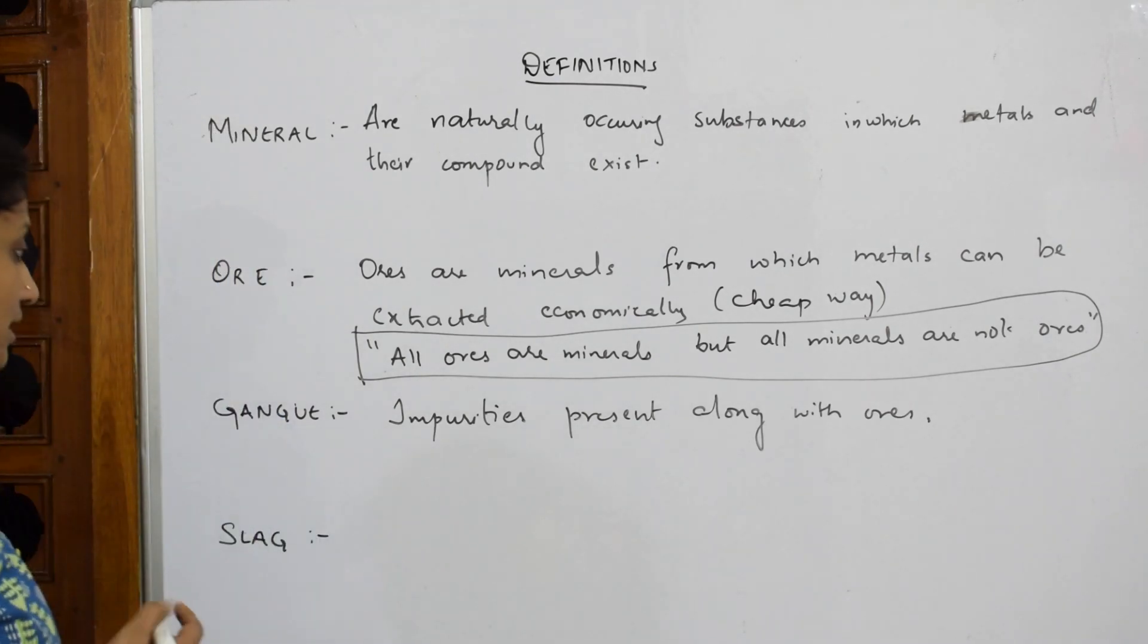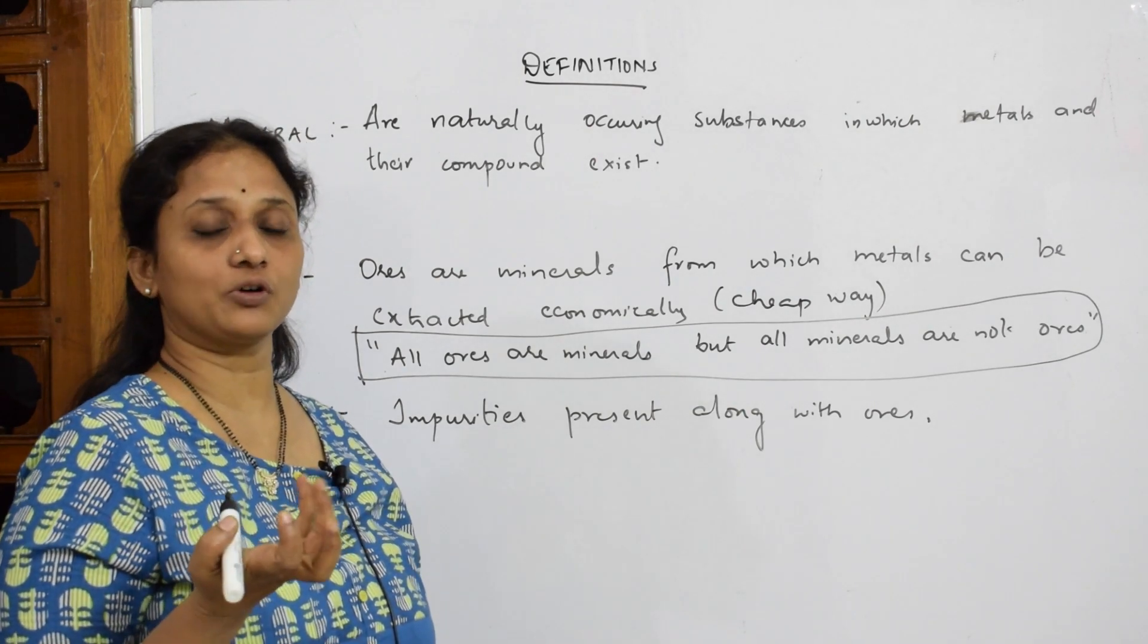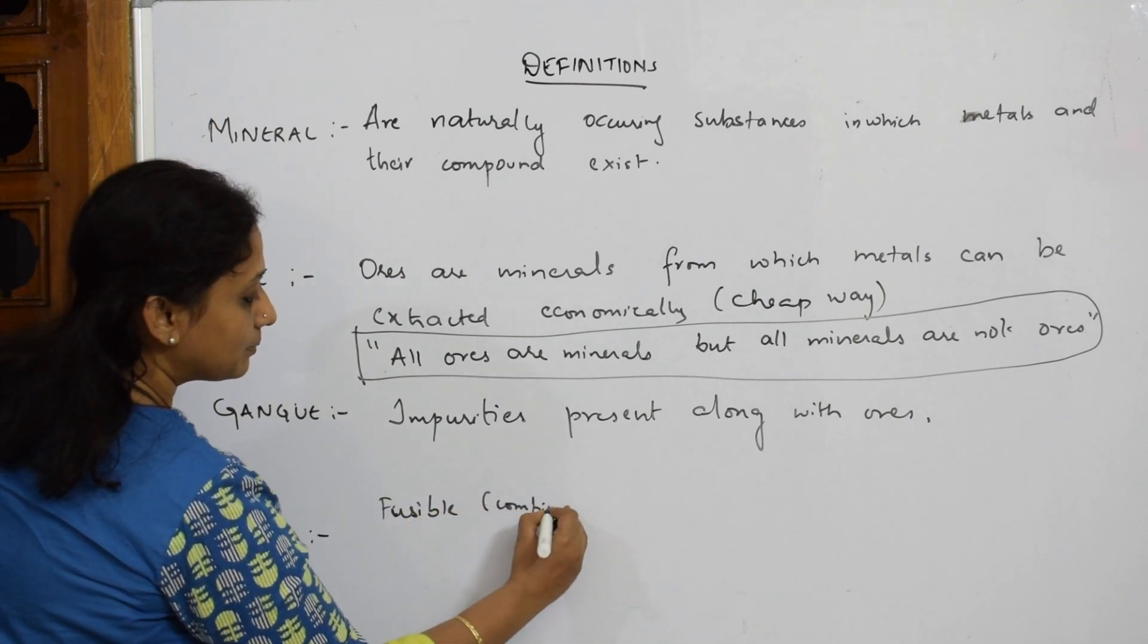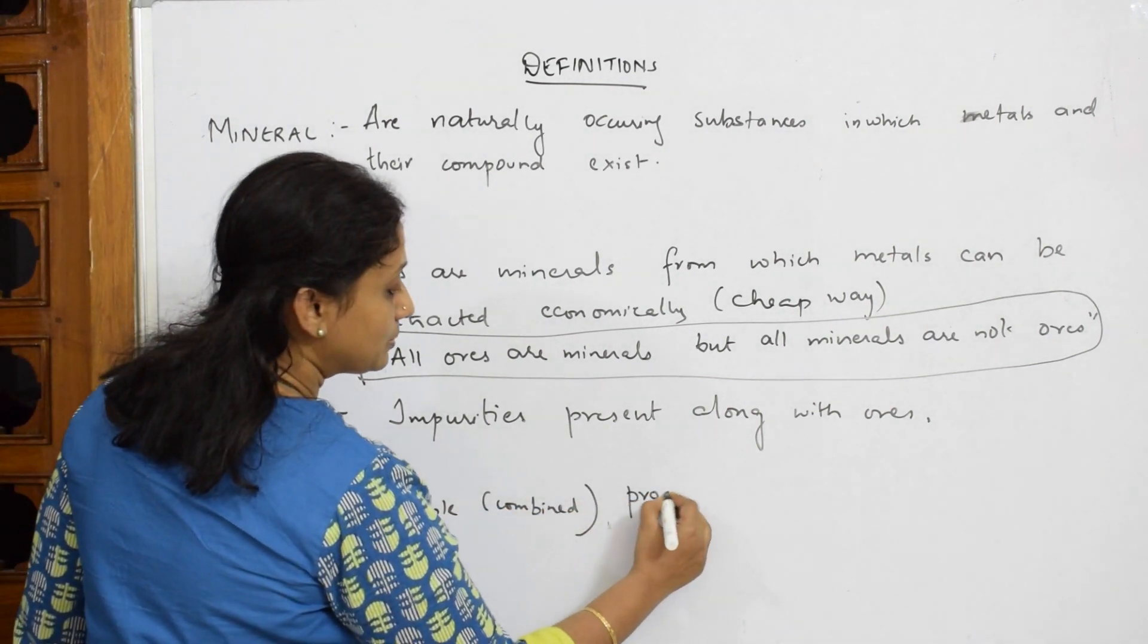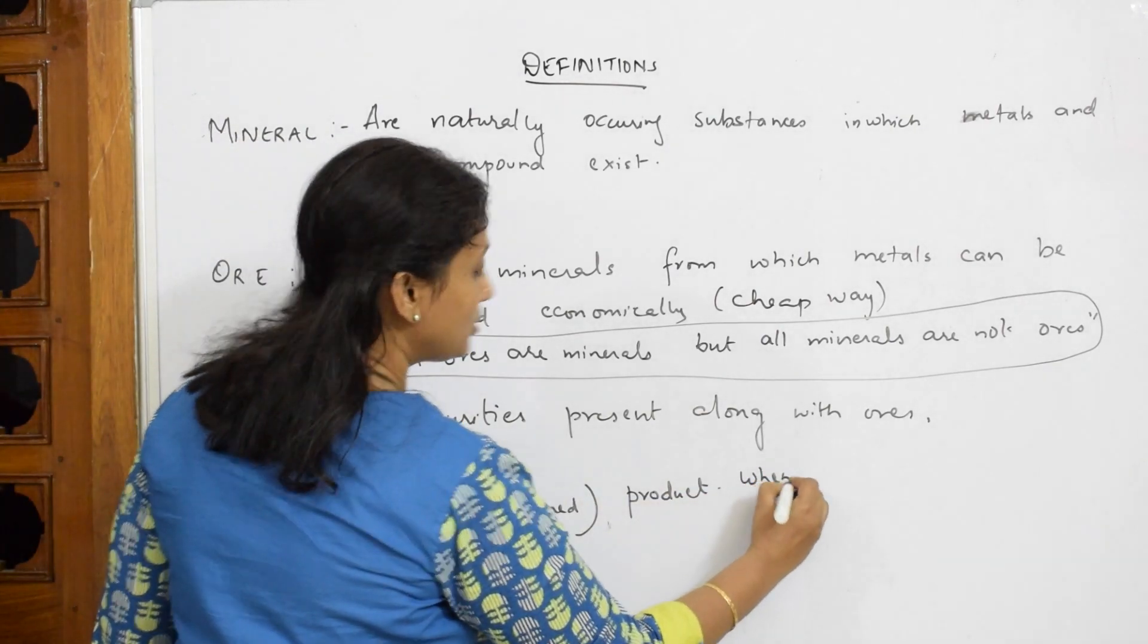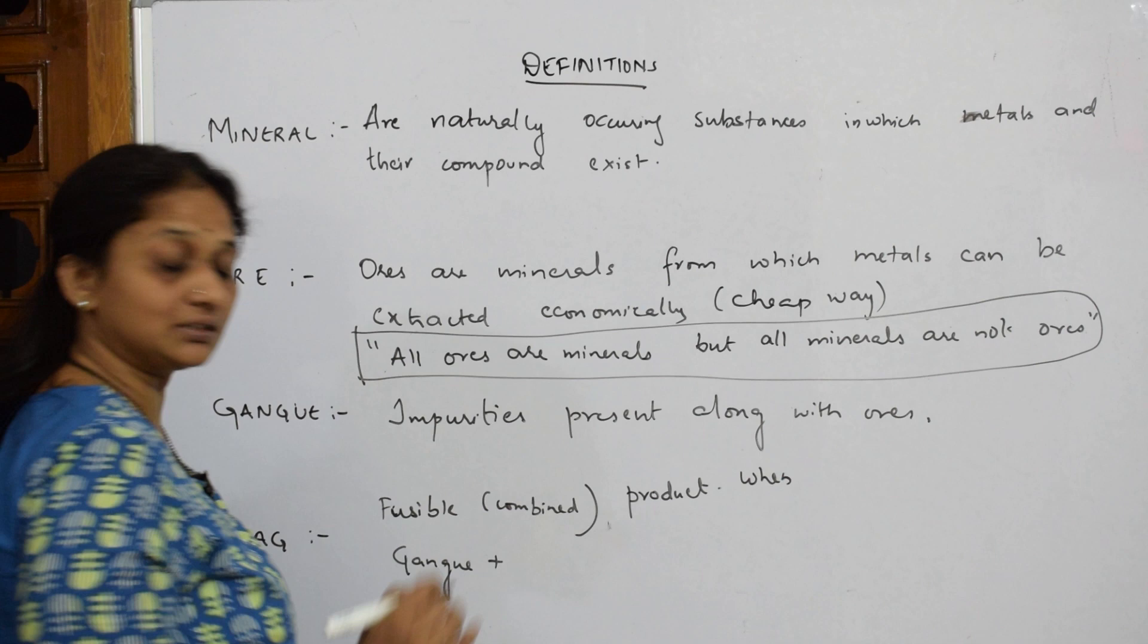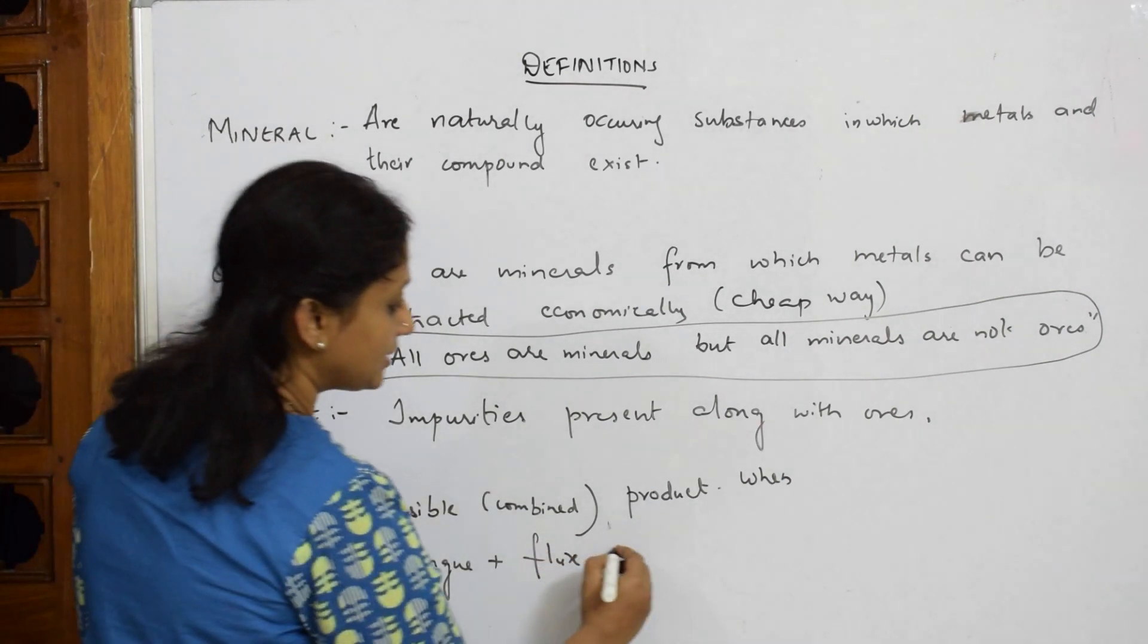We also call it flux. Let us see what slag is. Slag is a fusible product, which means a combined product. When is it formed? Gangue is present in the ore, so your gangue combines with a compound called flux. Gangue plus flux forms slag.